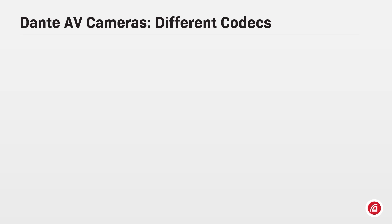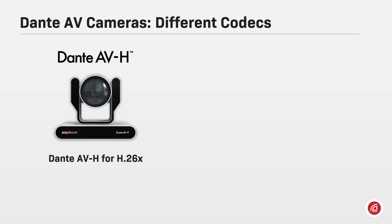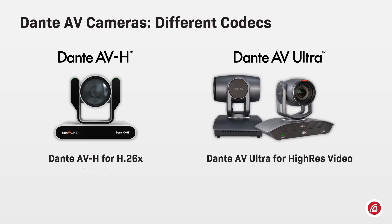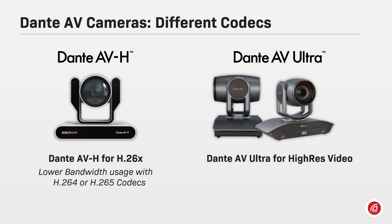So far, there are two different solutions within the Dante AV family: Dante AVH for H.26x devices and Dante AV Ultra for high resolution video. With a lower bandwidth codec — H.264 and H.265 — Dante AVH video won't impact your network and still delivers a very good quality image.